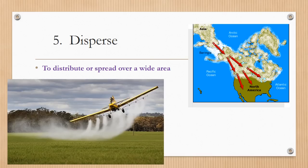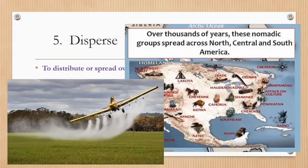Number five is the word disperse. It's an action word, and it means to distribute or spread over a wide area. You can see the crop dusting airplanes flying over a field and dispersing pesticides over the area. In the same way, people were dispersed all over North America. If we follow the land bridge theory, you can see people migrated from Asia over the Bering Strait into North America. The red arrow splits into two and three, showing that people dispersed or spread out all over North America, and over thousands of years these nomadic groups spread across North, Central, and South America.